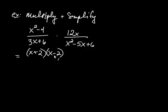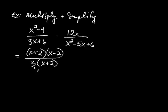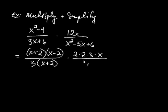These polynomials are prime — you can't factor them any further. Before we had prime numbers, now we have prime polynomials. In the denominator it's going to be 3 times x plus 2. For the next fraction, the 12x gives us 2 times 2 times 3 times x. And in the denominator, the trinomial factors as x minus 2 times x minus 3.